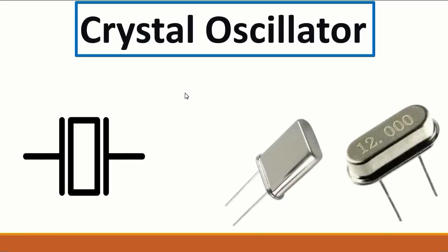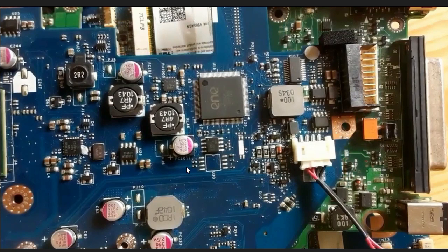Next we have the crystal oscillator. This is basically the symbol for the crystal oscillator. It could look like this, or as you can see here on the motherboard. Let's check if we can find any crystal oscillator here — yes, as you can see over here, we have a crystal oscillator.